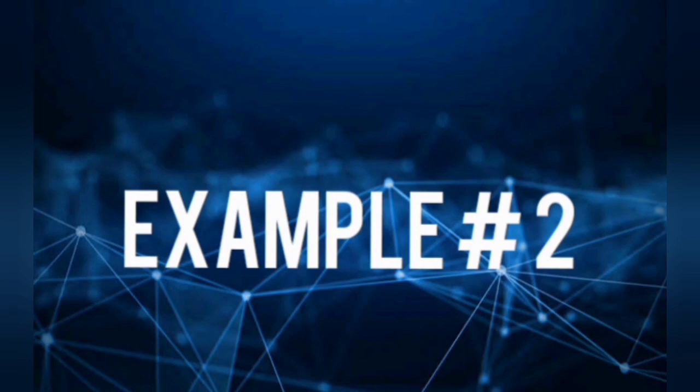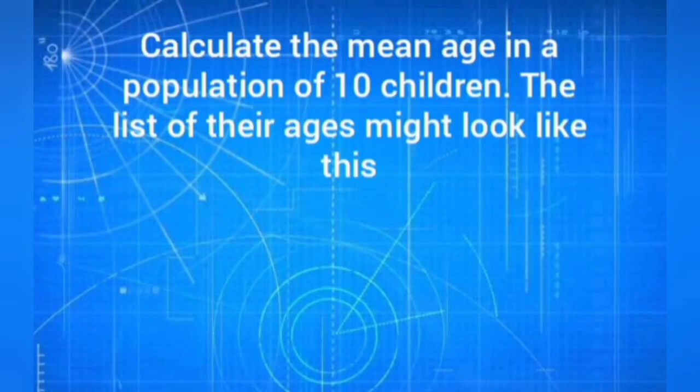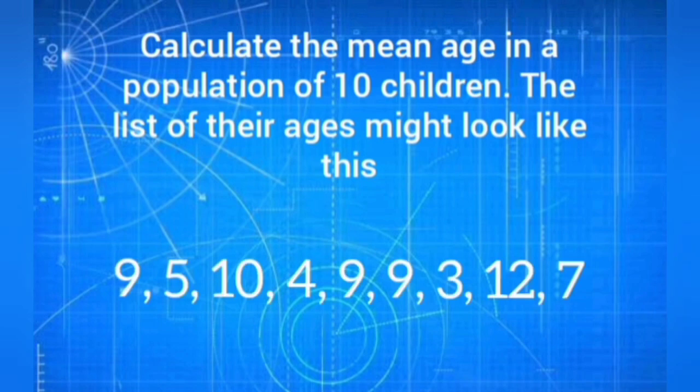Example number 2: Calculate the mean age in a population of 10 children. The list of their ages might look like this: 9, 5, 10, 4, 9, 9, 3, 12, and 7.